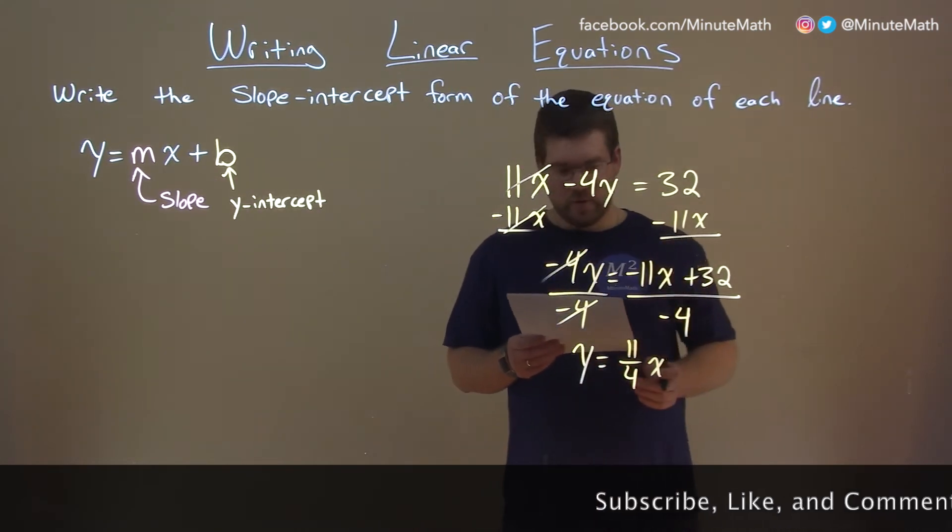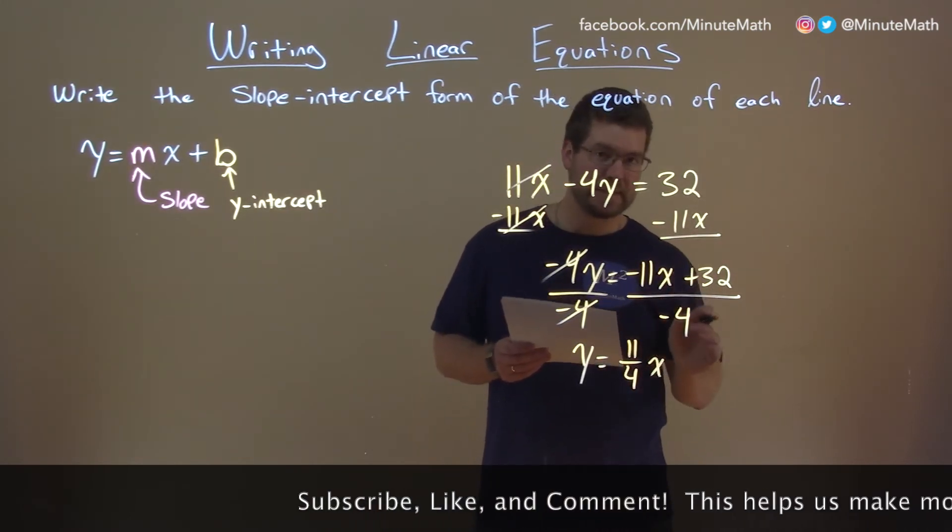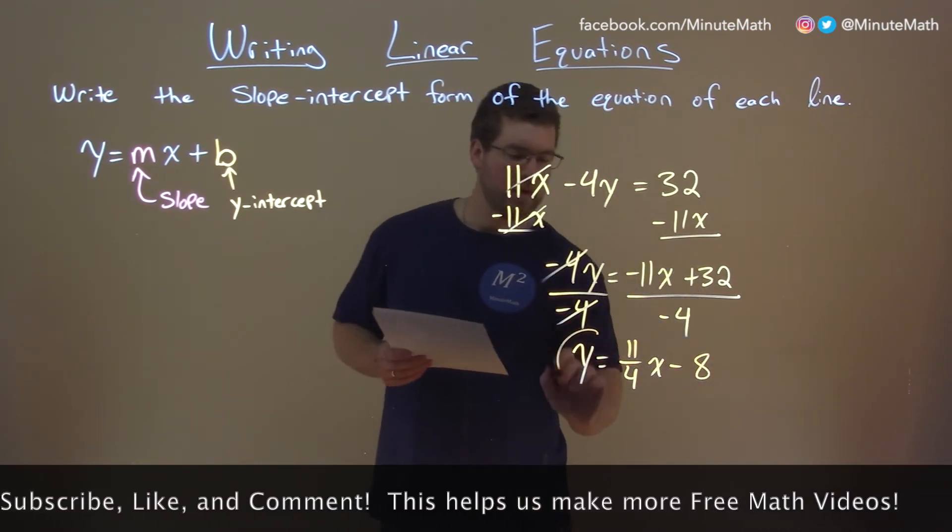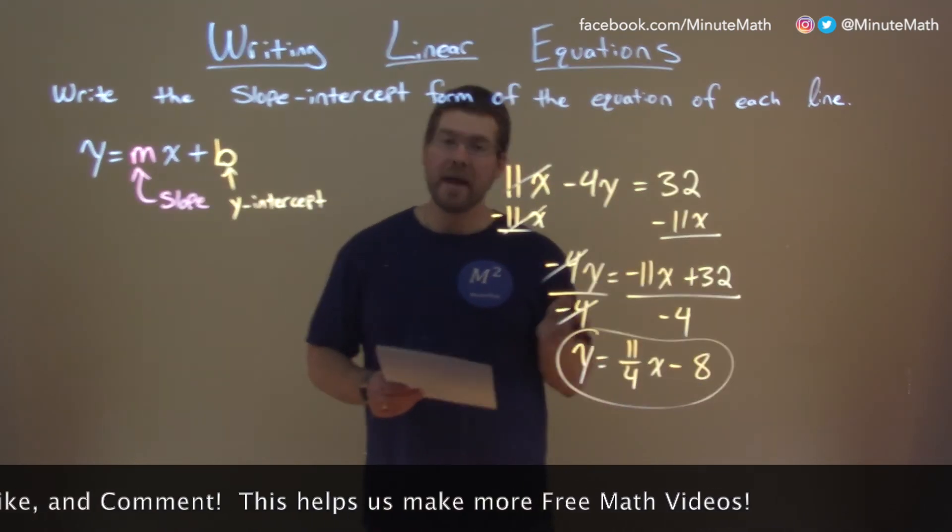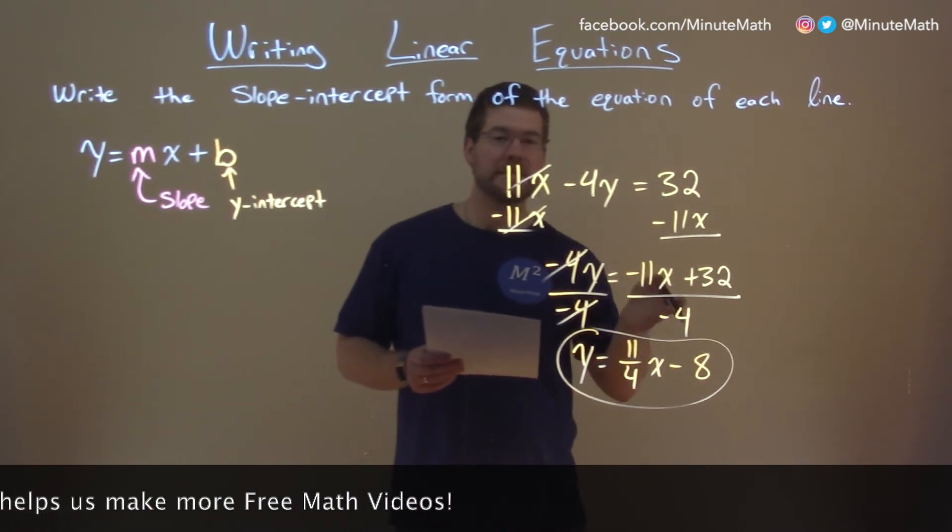Now we have 32 divided by negative 4, that becomes a minus 8. So, we have minus 8 here, minus 8's our y-intercept, and now we are done. We have our answer, y equals 11-fourths x minus 8.